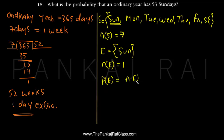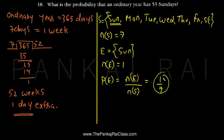Now the probability of our event — that is, an ordinary year having 53 Sundays — is the number of points in the event divided by the number of points in the sample space. So that is 1 upon 7. The probability that an ordinary year has 53 Sundays is 1 by 7. Thank you very much.